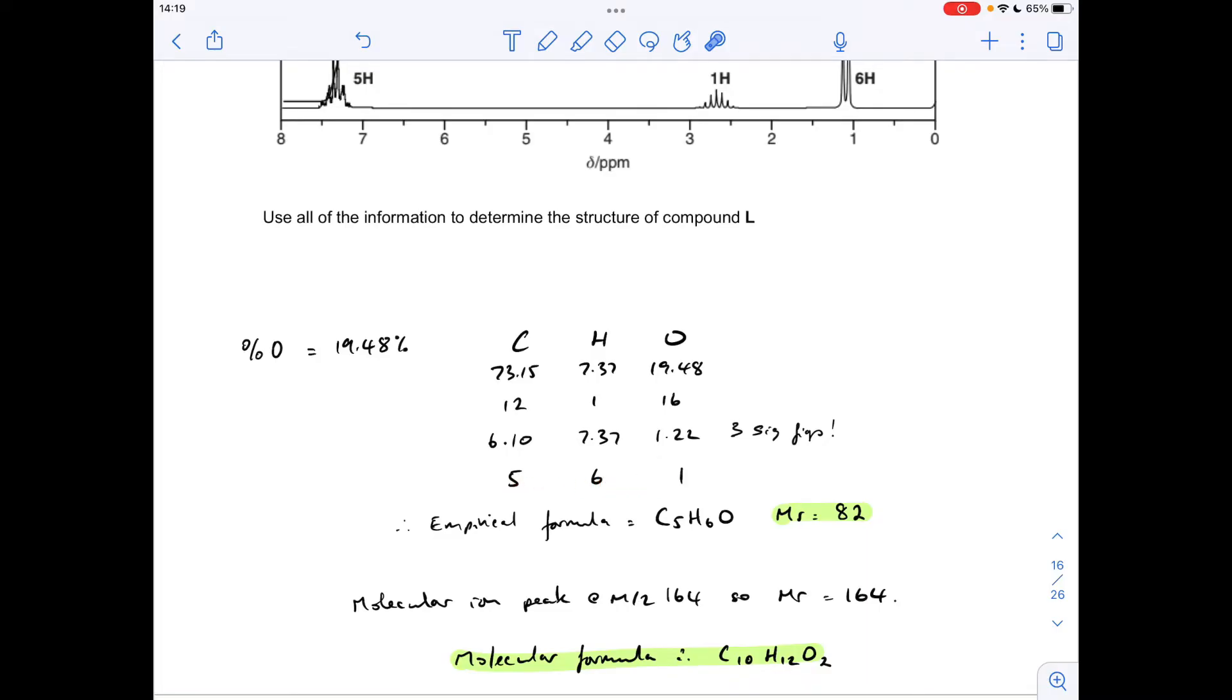So the empirical formula is C5H6O, the MR of that is 82. Remember that molecular ion peak had an M over Z of 164, so obviously that's double that, so we double all the atoms out, and we get C10H12O2.